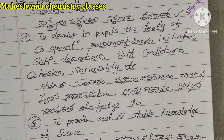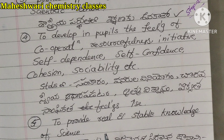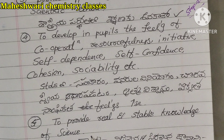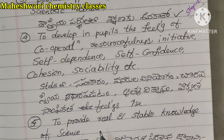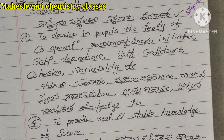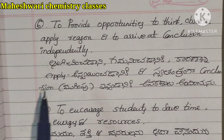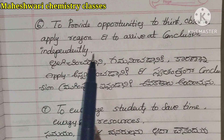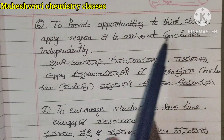To provide real and stable knowledge of science through laboratory work. To provide opportunities to think, observe, apply, reason, and to arrive at conclusions independently — these are key objectives of the laboratory.